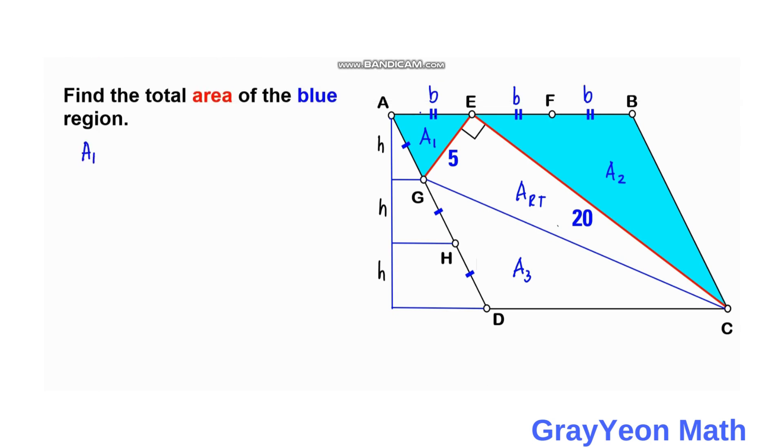So area 1 is equal to 1 half times, this is the base of area 1, and the height is h. So 1 half bh.